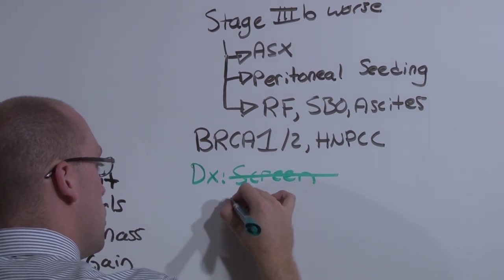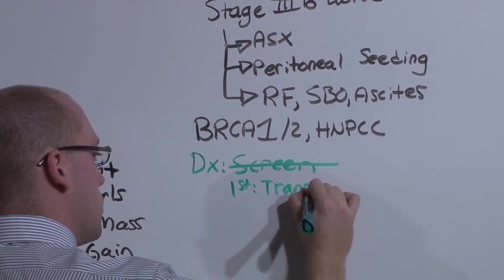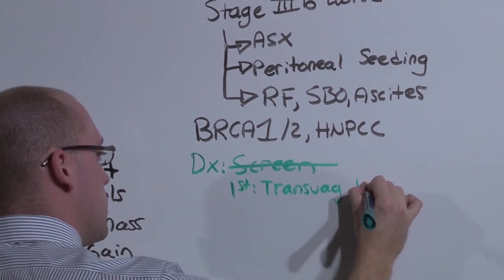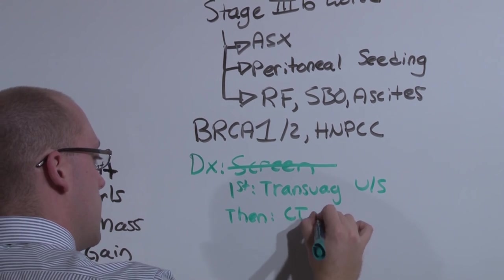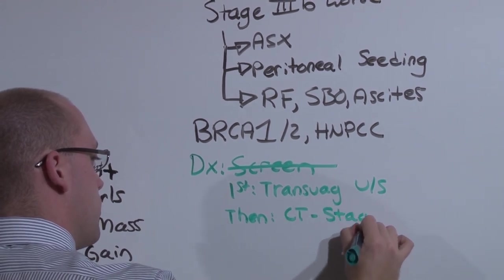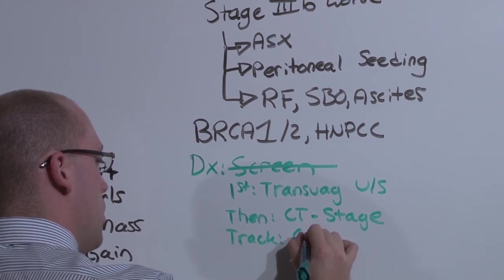Because it is an ovarian tumor, the first thing you are going to do is investigate with a transvaginal ultrasound. This identifies the mass. Then you are going to get a CT scan in order to stage. And you can track these tumors using the CA125.